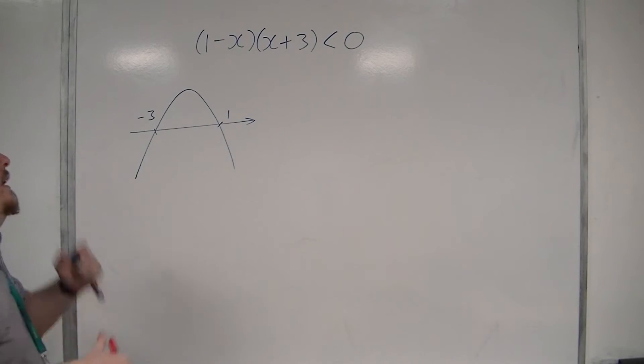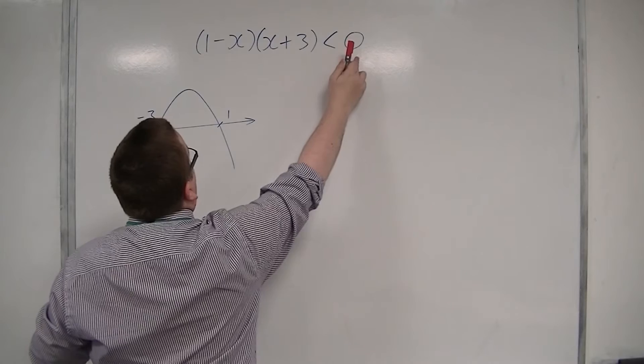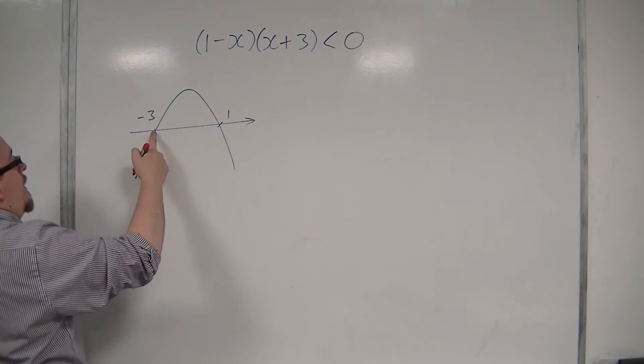So now it's asking, where is the parabola below the x-axis? And it's below it here,